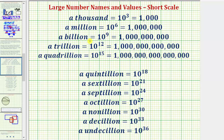So a billion, which equals 10 to the ninth, or one followed by nine zeros, is 1,000 times larger than a million. A trillion, which equals 10 to the 12th, or 10 raised to the power of 12, is equal to one followed by 12 zeros. A trillion is 1,000 times larger than a billion.